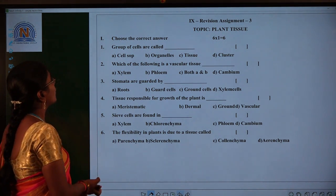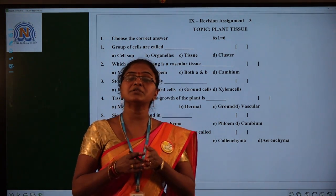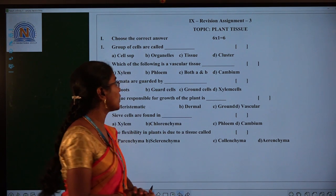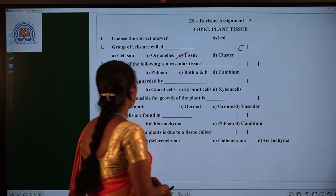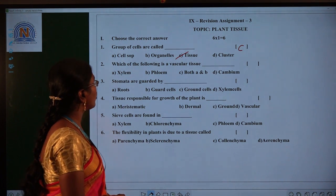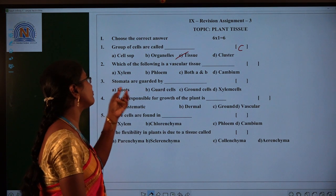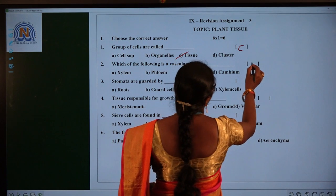Let us see the first one. Group of cells are called? So a group of cells which are having similar function, similar shape, and doing same function, that is called as tissue. Option C. And the second one, which of the following is a vascular tissue? In given options, xylem and phloem both combinedly called as a vascular tissue under option C.